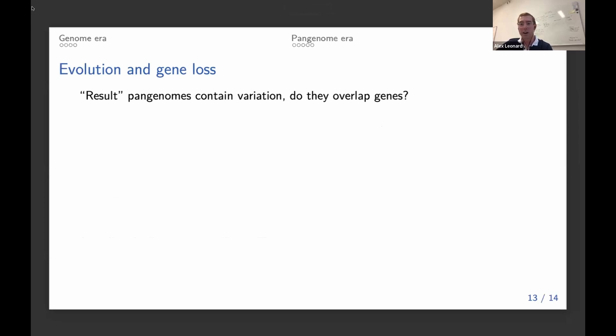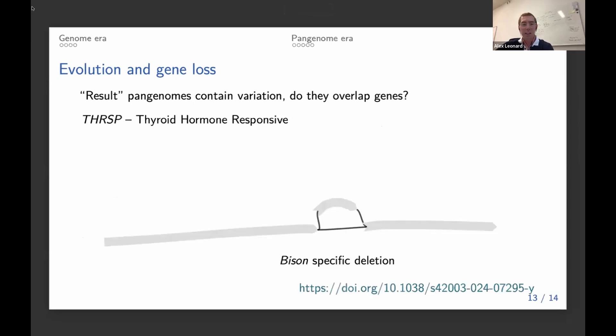And we saw this was the case for THRSP. So this is a thyroid hormone response protein. What we saw is that the first exon for this protein was in a location that was present in cattle and yak, but deleted in bison.